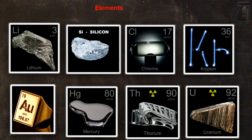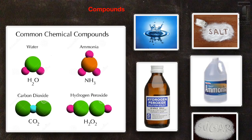Elements are also uniform throughout. The second type of matter we need to review is compounds. Compounds are formed by two or more elements that have chemically reacted, and since they are formed by this chemical reaction, they can only be broken down by chemical means. Compounds are also pure substances, and they are also uniform throughout.